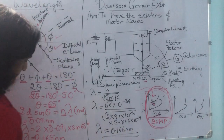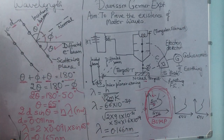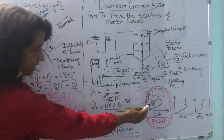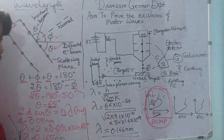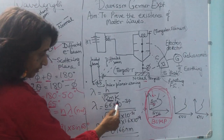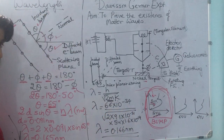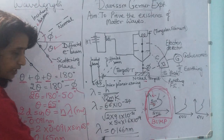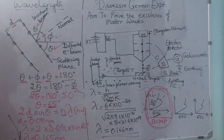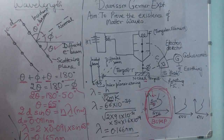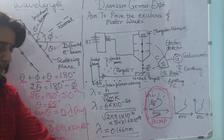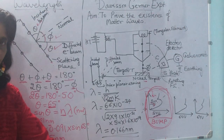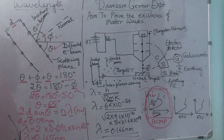Both lambdas — through the crystal structure concept using the azimuthal angle, and through kinetic energy using the de Broglie formula — come out the same. So the Davison-Germer experiment shows excellent agreement with the matter wave formula and completely confirms the existence of matter waves. Thank you.